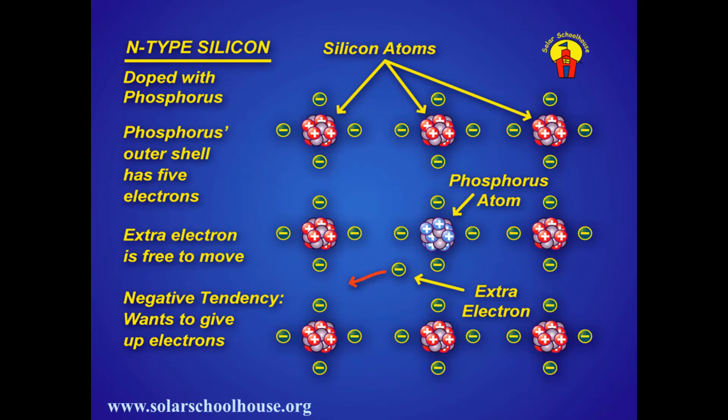The top layer of the solar cell, the N layer, is doped with a small amount of the element phosphorus. Phosphorus has five electrons in its outer shell, one more than silicon. When added to the silicon crystal, each phosphorus atom has an extra electron that is free to move about, giving the layer a tendency to give up electrons.